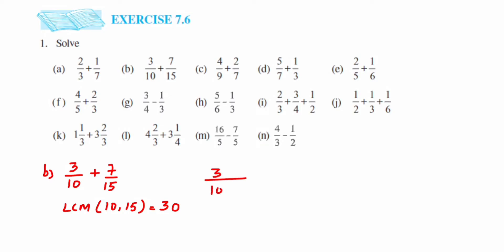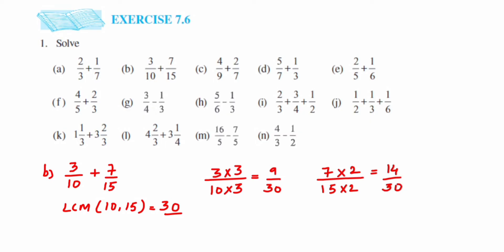Now I am going to change the denominator to 30 for both fractions. For 3 by 10, what do we multiply 10 by to get 30? It is 3. Multiply 3 in the numerator and denominator to get 9 by 30. For 7 by 15, we multiply by 2 to get 30, giving 14 by 30. So 9 by 30 plus 14 by 30 — write the same denominator 30 and add the numerators: 9 plus 14 is 23, so the answer is 23 by 30.